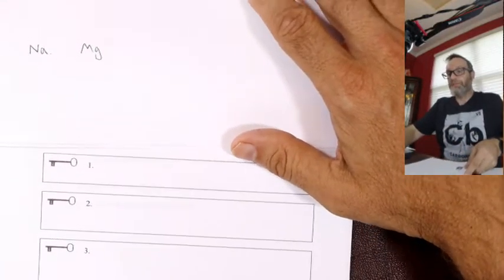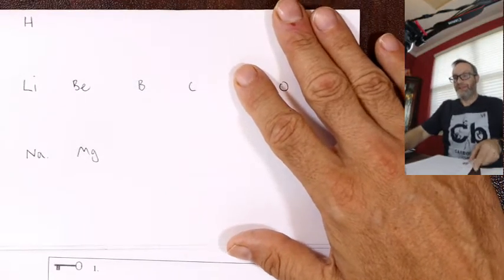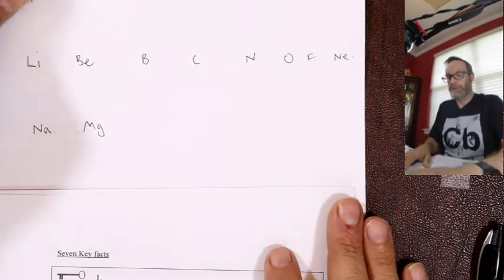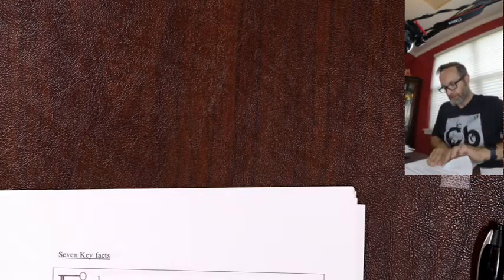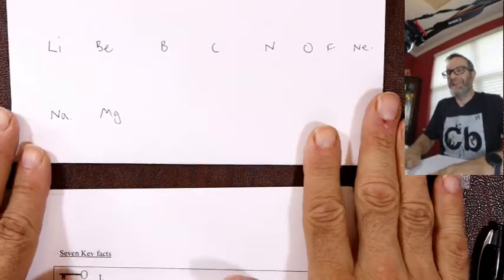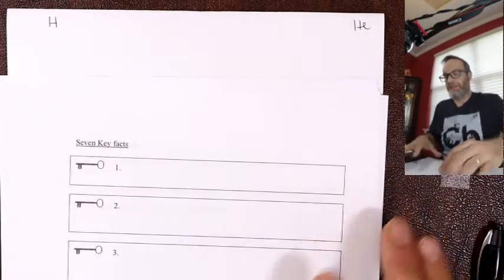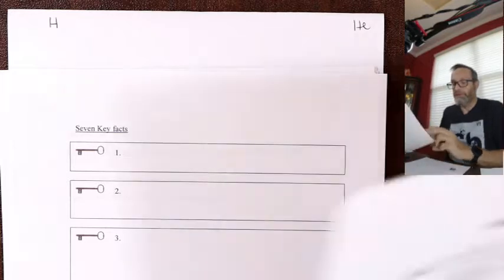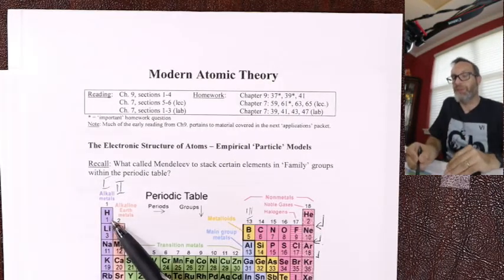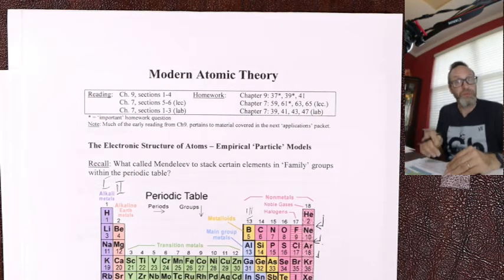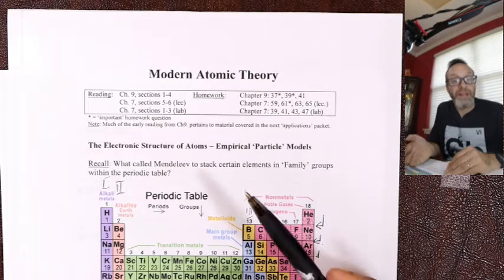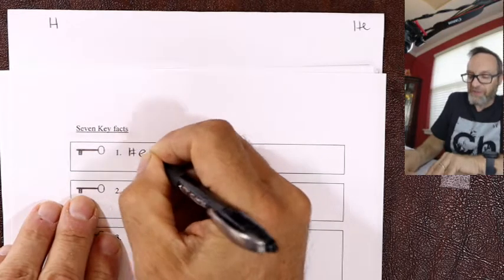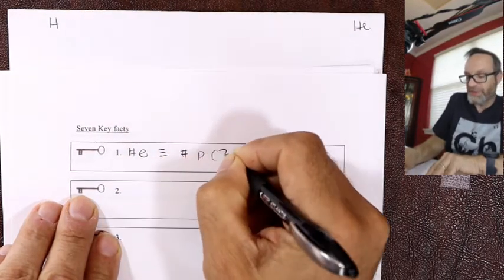On the next page, we have seven rules which will determine how we create these configurations — seven key facts. Key fact number one: how many electrons does each atom have? It's the same as the number of protons, which is the atomic number. All atoms are neutral, so they have the same number of electrons as protons. The rule is: number of electrons equals number of protons, which equals the atomic number.